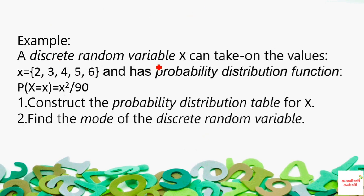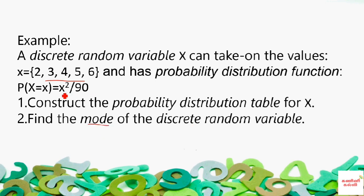For example, a discrete random variable x takes on the values 2, 3, 4, 5, 6. The probability distribution function is P(x = x) = x² / 90. First we will define this function and set up the probability distribution table.